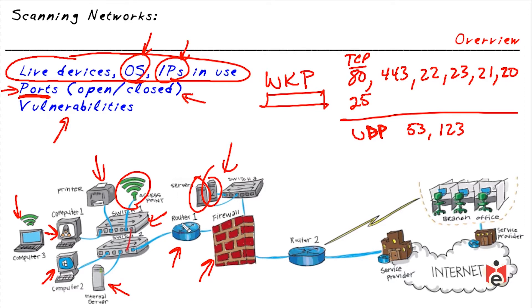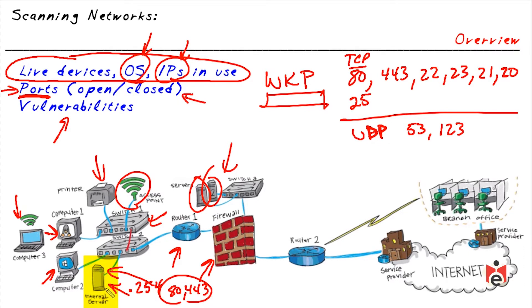For example, if we do a network scan and identify a machine at 192.168.1.254 with ports 80 and 443 open, it's a pretty good bet that internal server is running web services because it's listening and responding to queries on those ports. Another objective of scanning is to identify potential vulnerabilities.